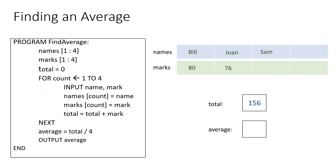We go back to the top of the loop, input a name and a mark, and total = total + mark: 156 plus 68 gives us 224. The counter becomes 4, we input another name and another mark, and total = total + mark: 224 plus 65 gives us 289. Next takes the counter to 5 and the loop ends. Average = total / 4, which gives 72.25, and we output the average.